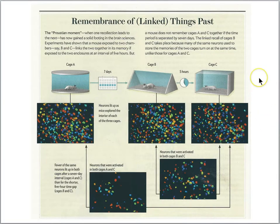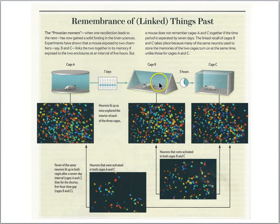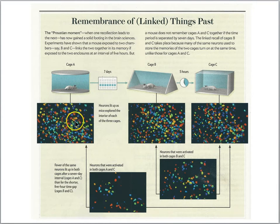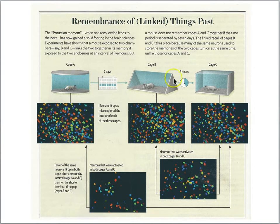This idea is illustrated in a 2017 Scientific American article by Silva, showing that overlapping populations of cells are activated for temporally near events. In this experiment, a mouse is placed in cage A, then seven days later in cage B, and then five hours later in cage C. The B and C experiences are close in time compared to the experience of cage A. Using various tagging techniques, they tagged the neurons that are active for each cage experience, and wanted to see what kind of overlap there was — whether some cells were activated for both experiences.